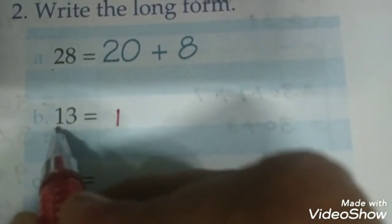13. 13 means 1 ten. Yeh dekhen, tens ki place pe 1 hai. 1 ten, to hum likhenge 10 plus, aur ones ki place pe hamare paas hai 3. We will write 3 over here.